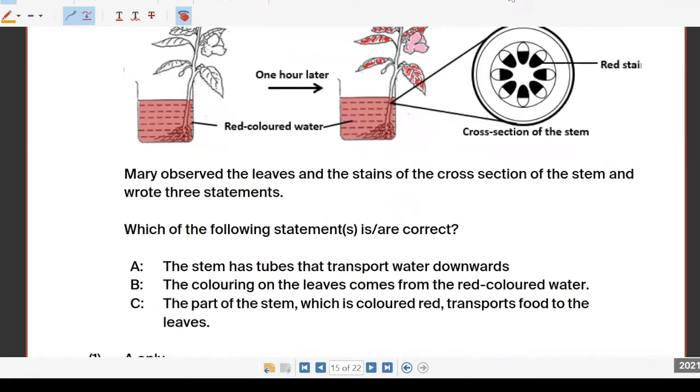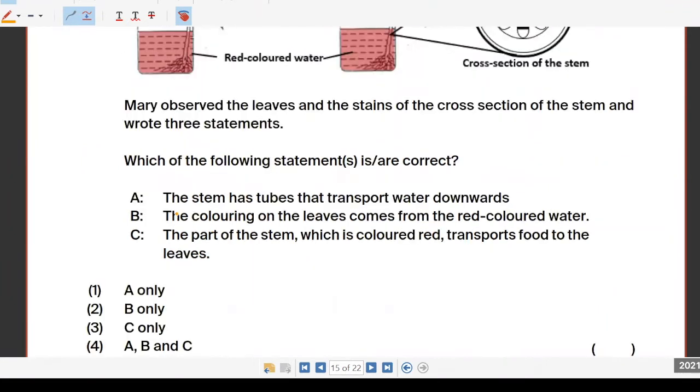Your answer is two, B only. That means A is wrong. 'Stem has tubes that transport water downwards.' Lincoln, why is this wrong? The water comes from the roots, not the leaves. But they say the stem has tubes that transport water, correct. But downwards? Upwards. So this is the wrong word. This one is supposed to be upwards.